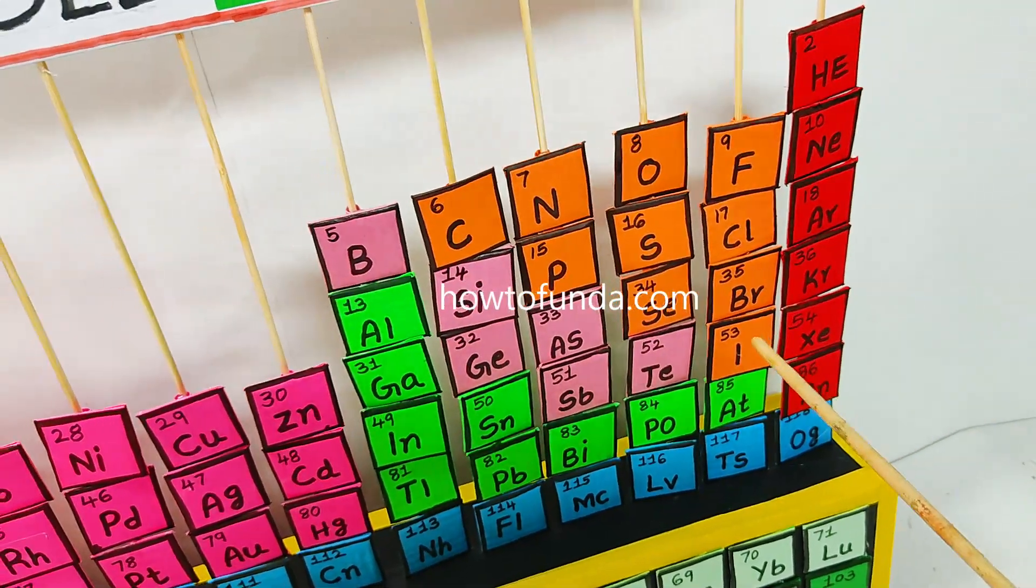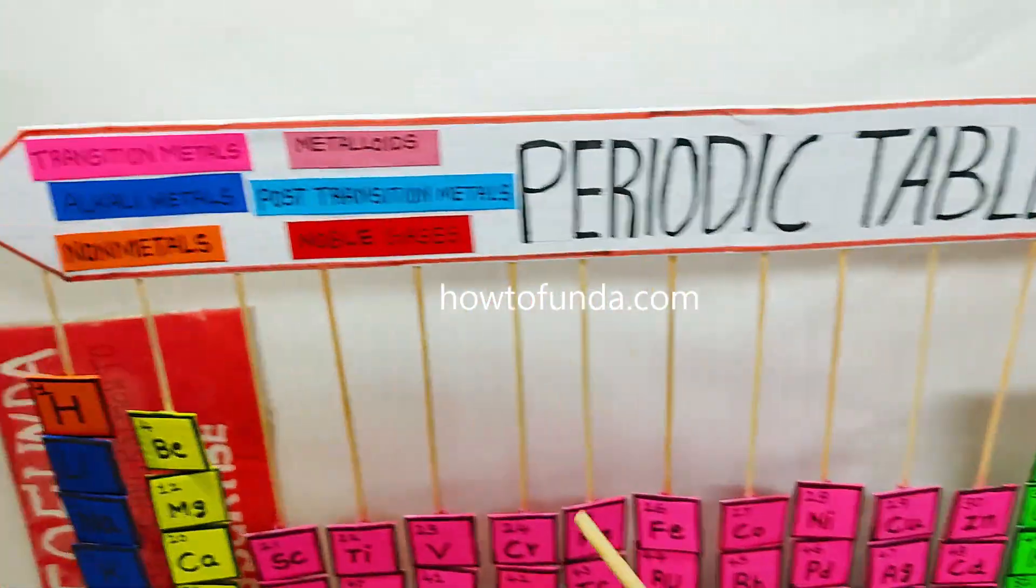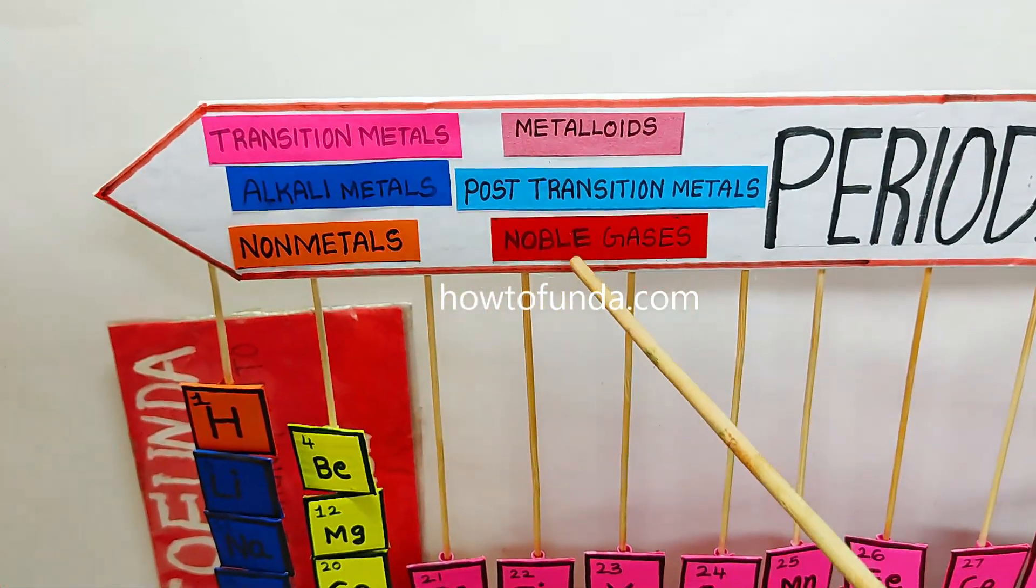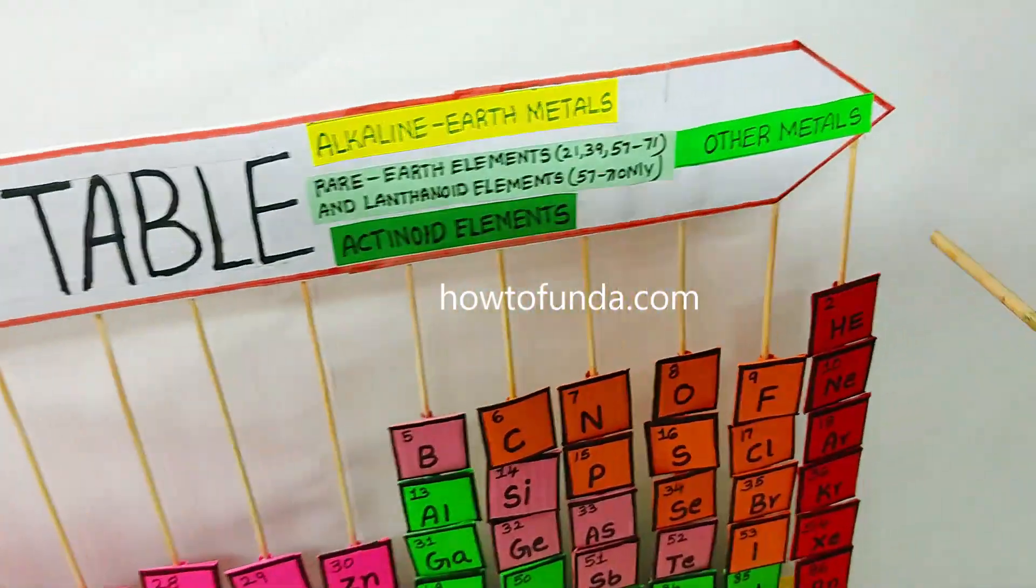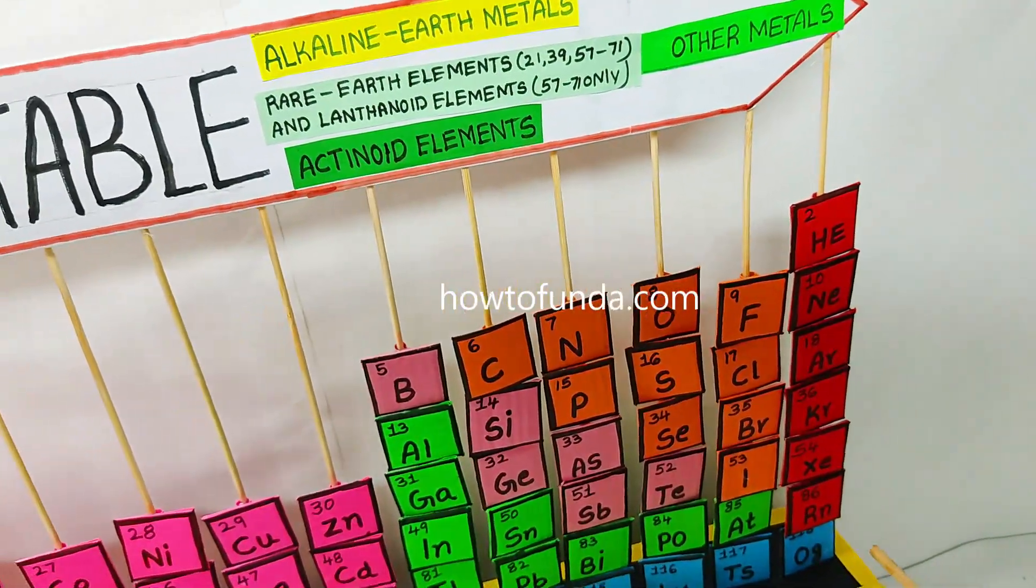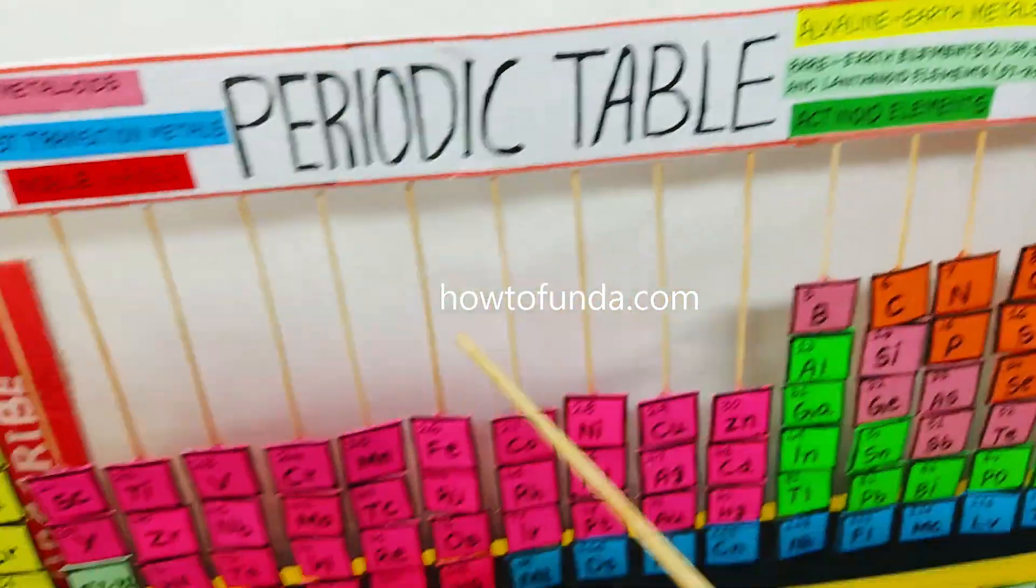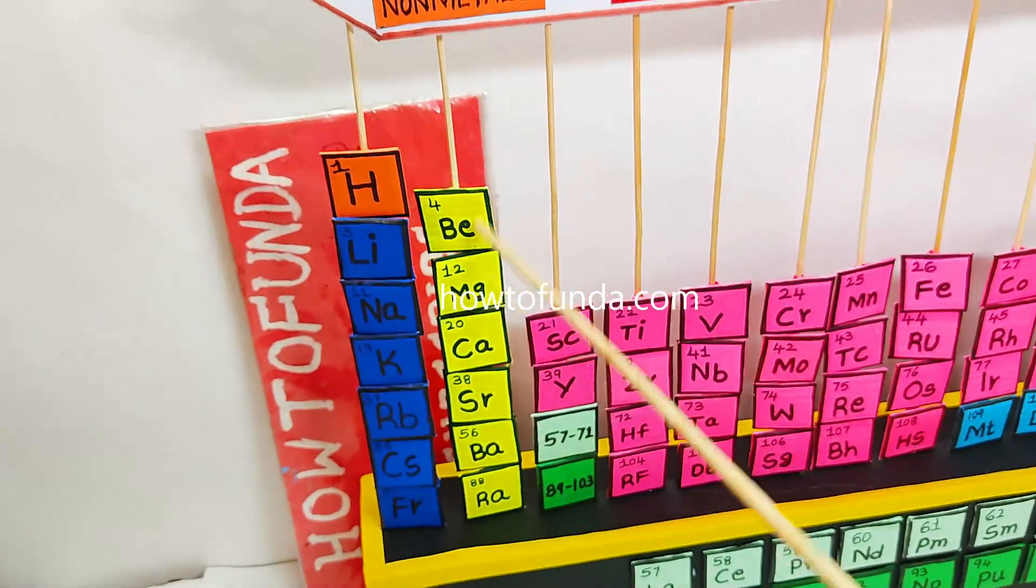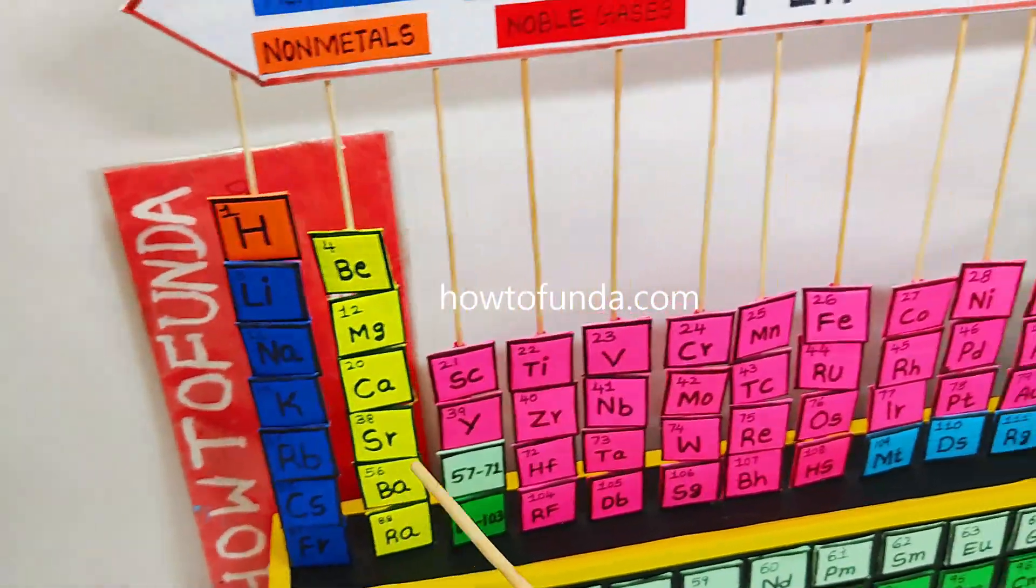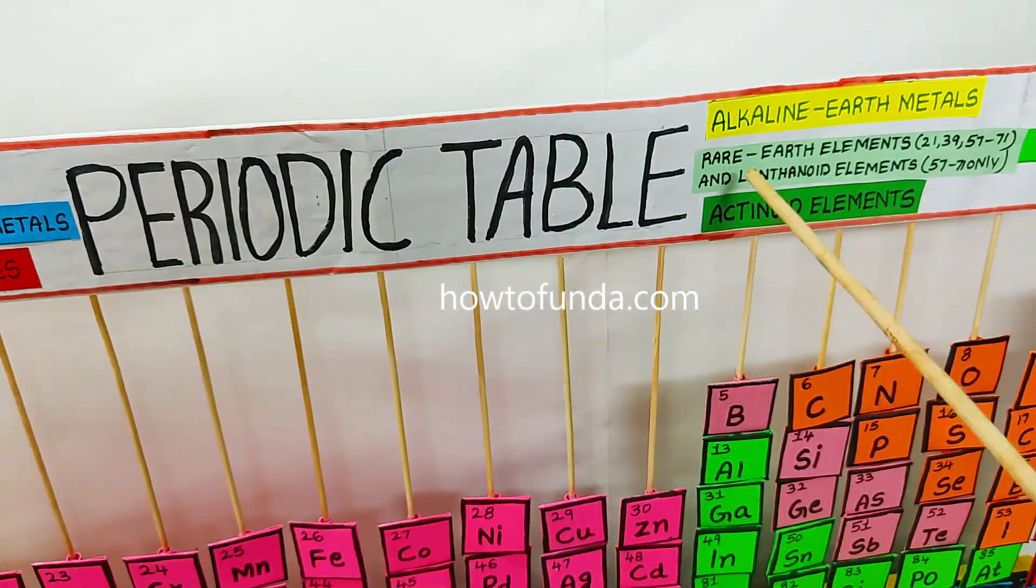We have noble gases here in the dark red color, and we have alkaline earth metals given in this yellow color.